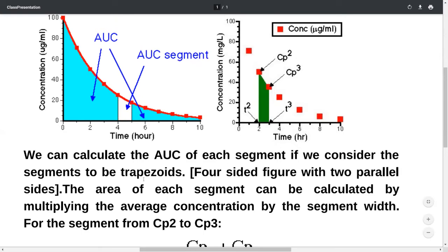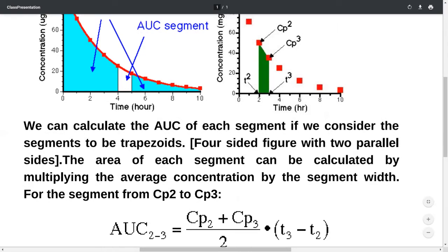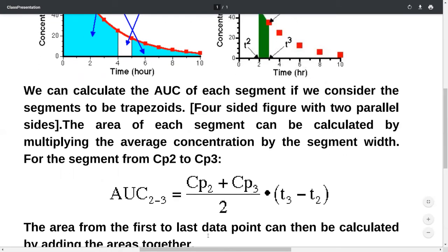Here you can see in the example, the concentration at time 2 hour and the plasma concentration at time 3 hour is given. We calculate AUC 2 to 3 as plasma concentration at time 2 plus plasma concentration at time 3, divided by 2, and multiply it by the width. Here the width is T3 minus T2, which is 1 hour.